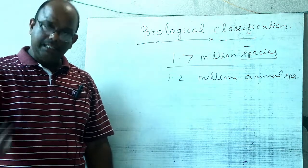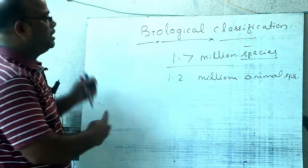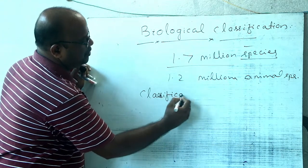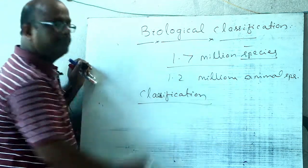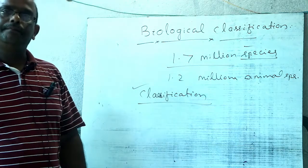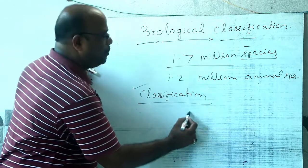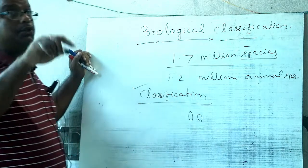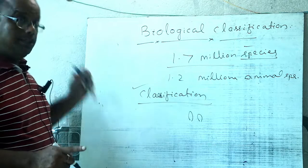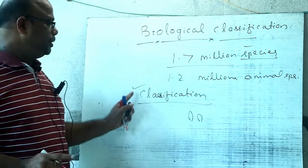For convenience in study, classification of all living organisms is necessary. What is classification? The answer is: grouping of living organisms into smaller and larger groups on the basis of similarities and differences is known as classification.